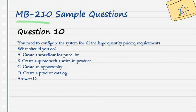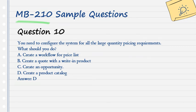Question 10. You need to configure the system for all the large quantity pricing requirements. What should you do? A. Create a workflow for price list. B. Create a quote with a write-in product. C. Create an opportunity. D. Create a product catalog. Answer: D.